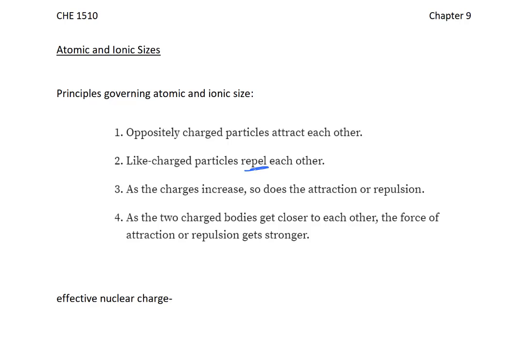We also know that if we make our magnet bigger, then the attraction gets stronger. The same thing is going to happen in Chemistry. If we go from a plus one ion and a minus one ion being attracted to each other, to a plus two ion attracted to a minus one ion, this attraction is going to be greater. And as the two ions get closer to each other, the force of attraction gets stronger, or if they're repulsed, the force of repulsion gets stronger.